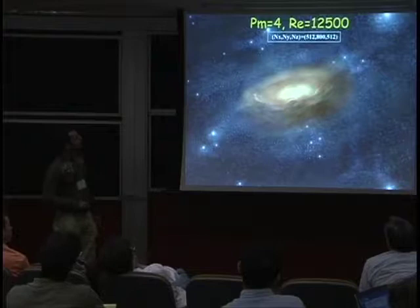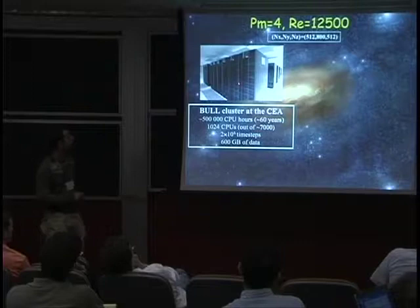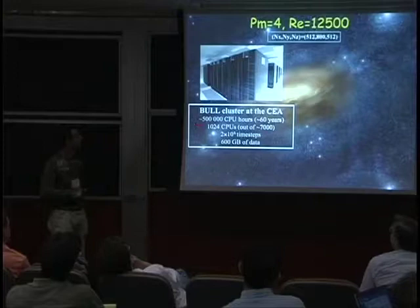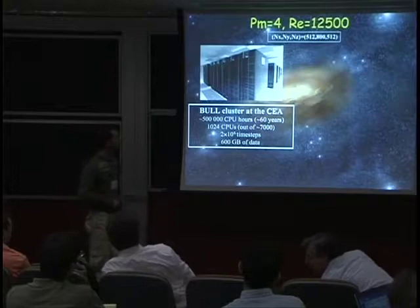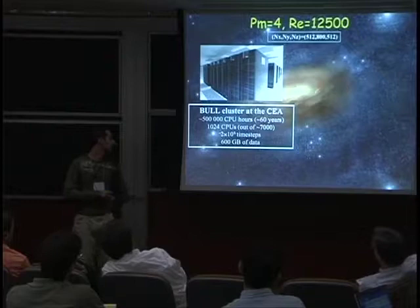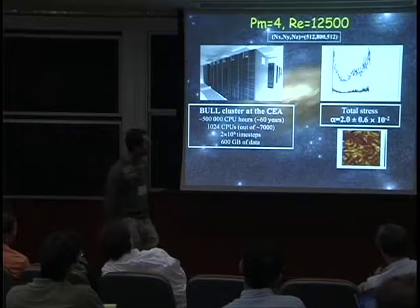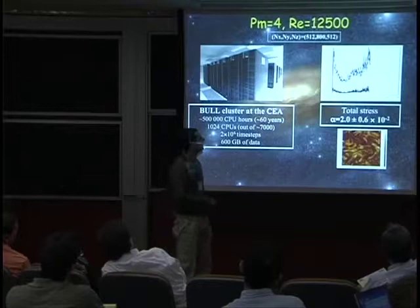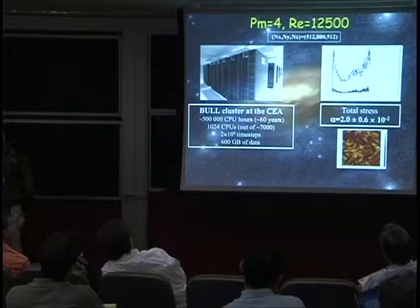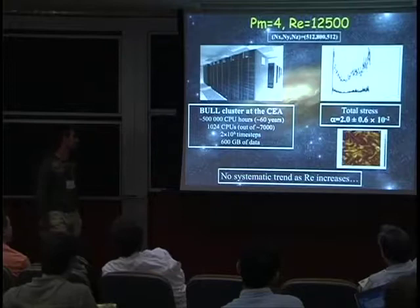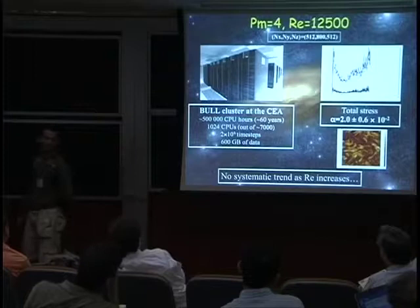I doubled the Reynolds number again and ran a 512×800×512 simulation using the resources at the CEA. This is a huge simulation — I burned about 500,000 CPU hours in the last 3 or 4 months, about 60 years of CPU time. You have to run on 1,000 CPUs for 3 weeks with a massive number of time steps and a large amount of data generated. At the end of the day, after 70 orbits, you get something which doesn't look very well converged: alpha of the order of 2×10^-2. The only conclusion I would make is that I don't see any systematic trend in alpha.